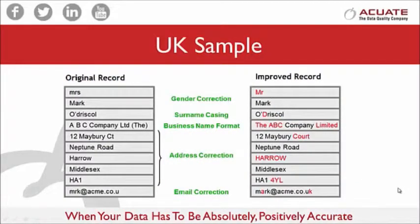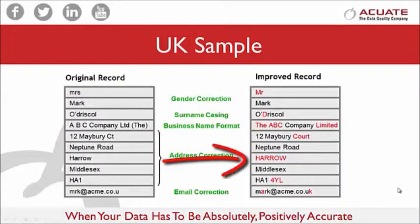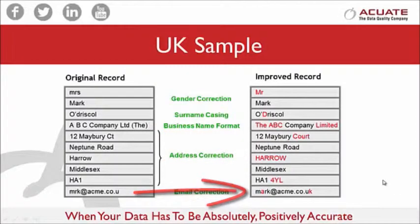Here's a sample of a UK contact record. As you can see, it needs a little bit of cleansing — from correcting the title, the casing on the name, standardizing the business name, address cleansing so mails arrive on time, and email name cleansing as well.